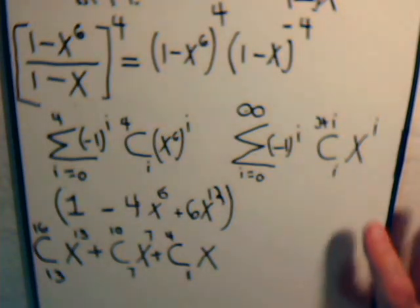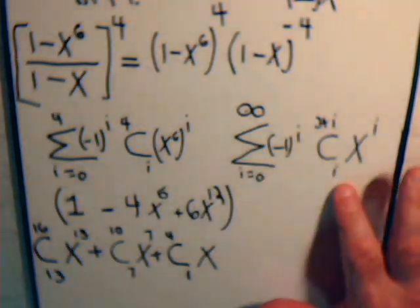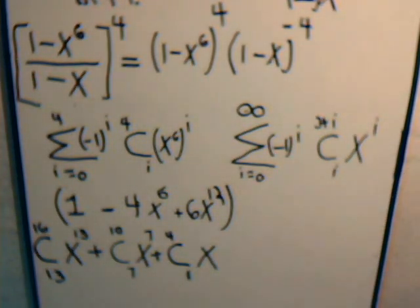Now we multiply these two together, of course this is an infinite series, so if I multiply this times this we're going to have a whole lot of x's. We're only interested in x to the 13th. All the other x's we don't care about.